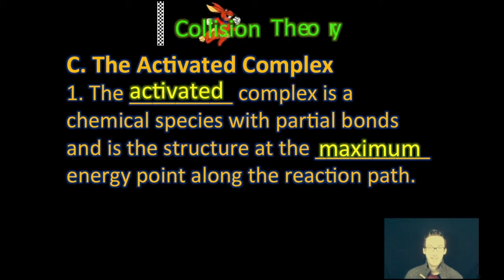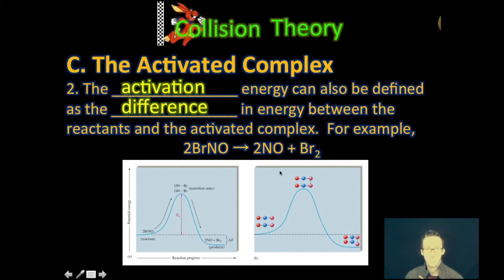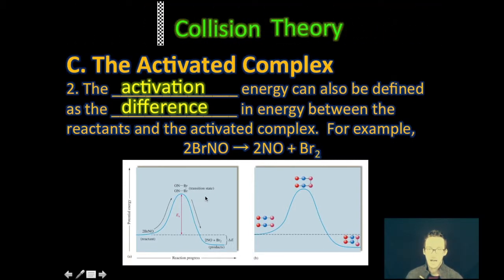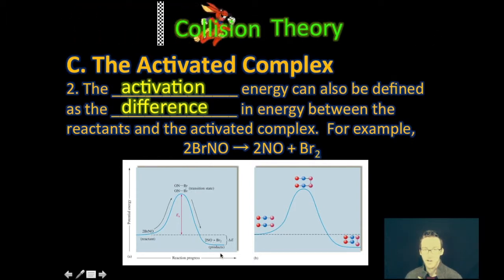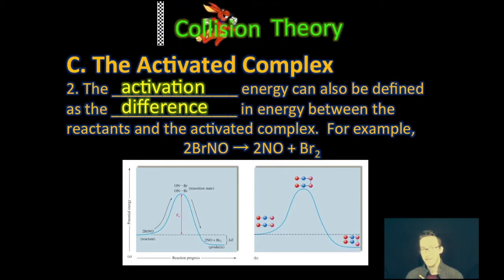This brings us to what's called the activated complex. It is the chemical species that has partial bonds and is the structure at the maximum energy point along the reaction path. At the peak or maximum of your energy profiles, we say we have that transition state or activated complex, where partial bonds exist as we transfer from reactants to products. We can also define activation energy as the difference in energy between the reactants and that activated complex.